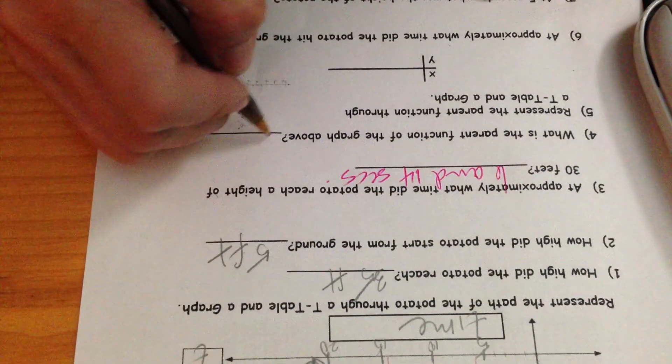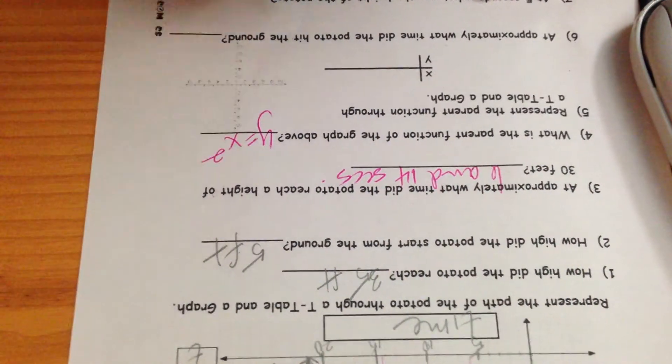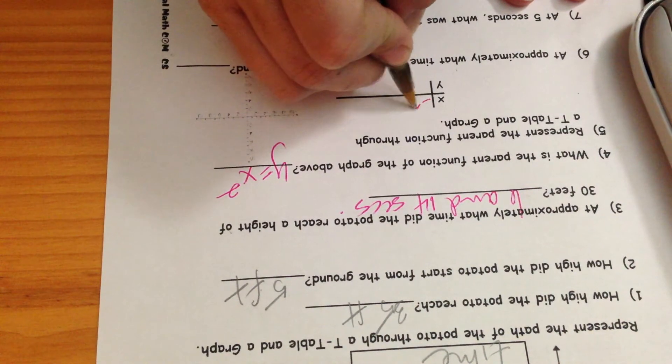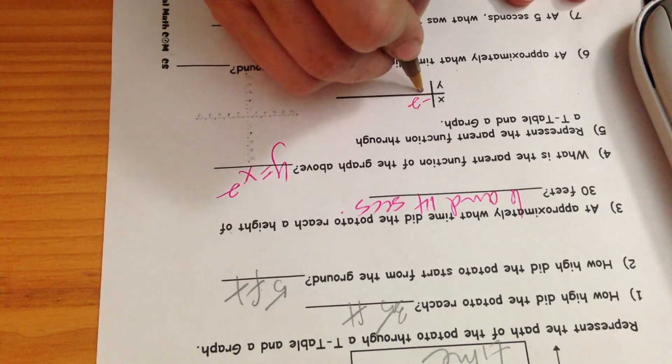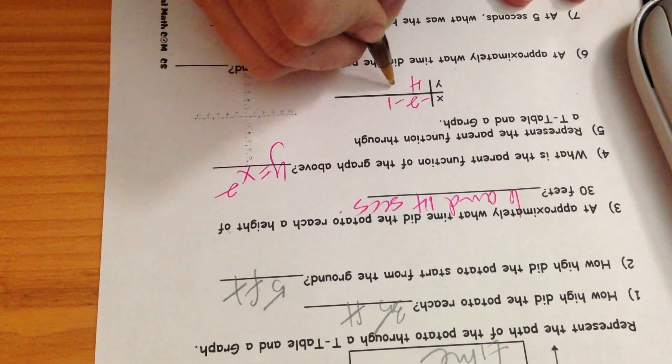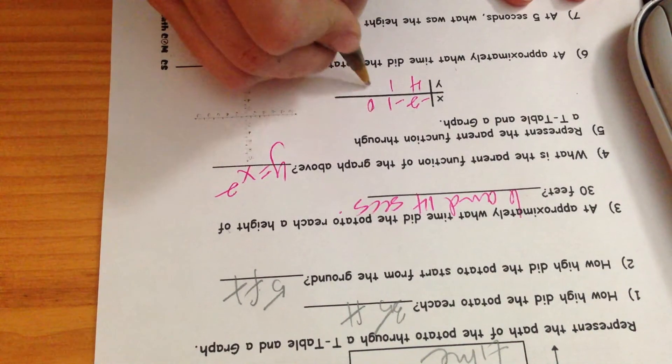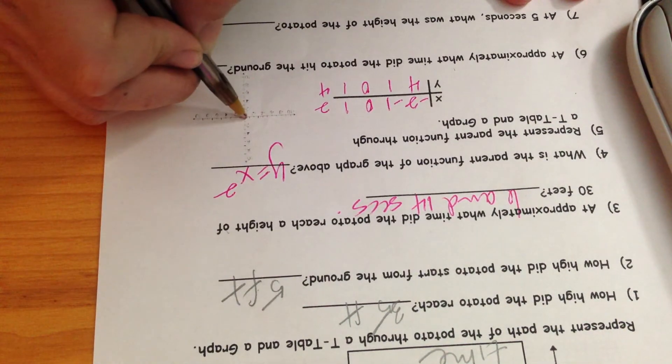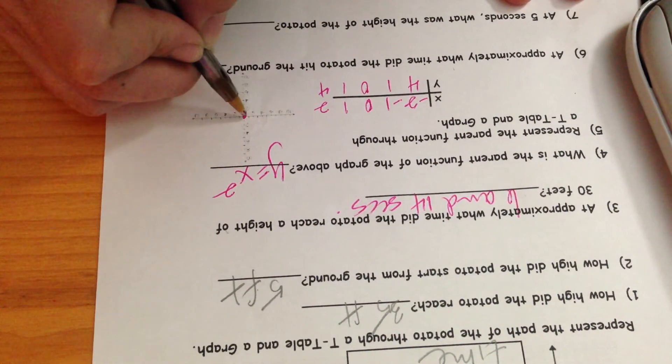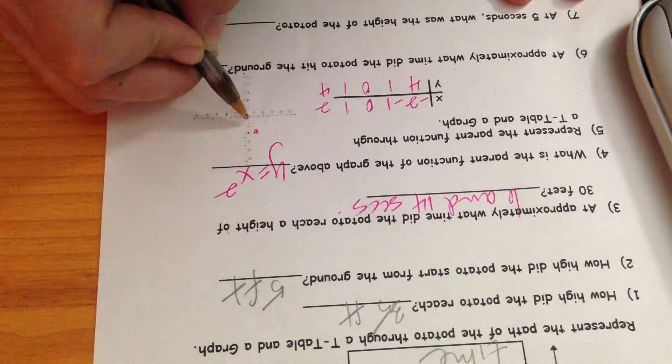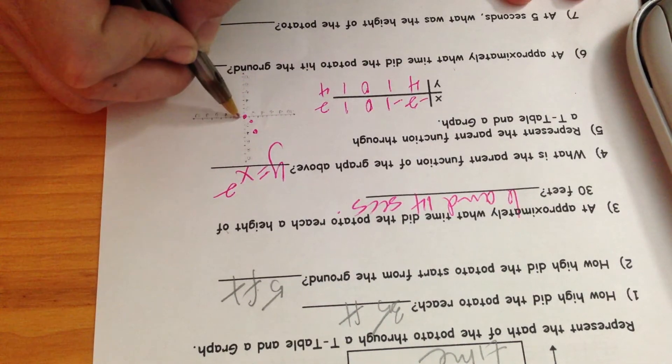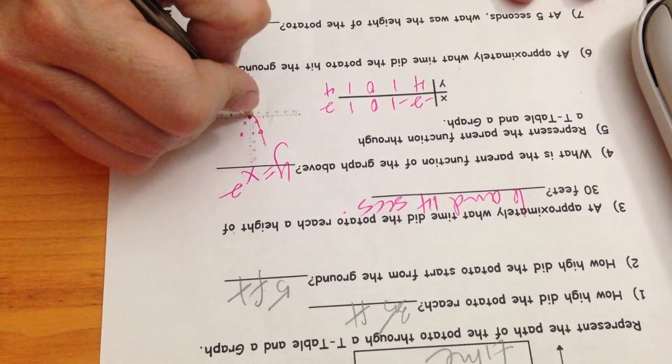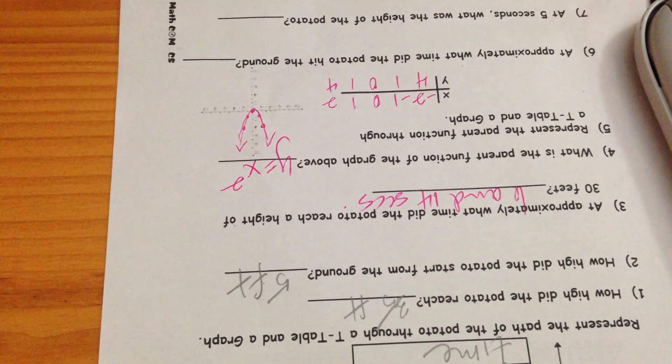Now when we talk about the parent function, we're talking about our y equals x squared. Y equals x squared is going to act like negative 2 times negative 2 is going to be 4, negative 1 times negative 1 is going to be 1, 0 times 0 is 0, 1 times 1 is 1, 2 times 2 is 4. That one looks like this. We messed around with this one before, we made a lot of comparisons.